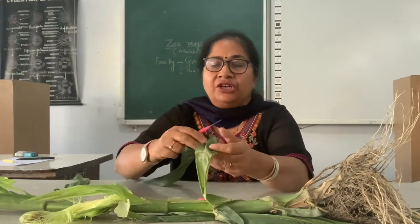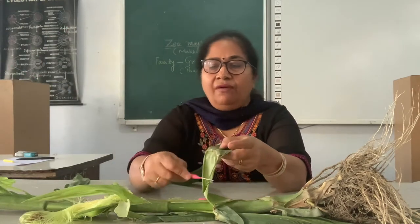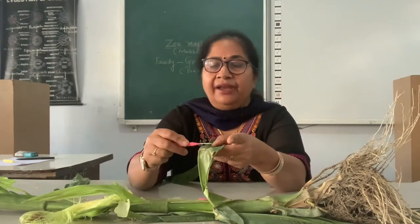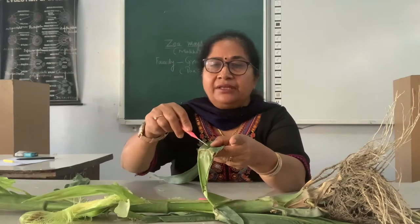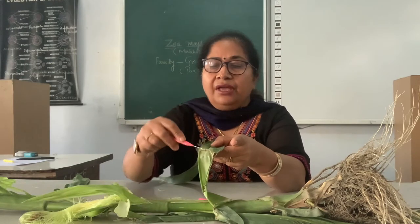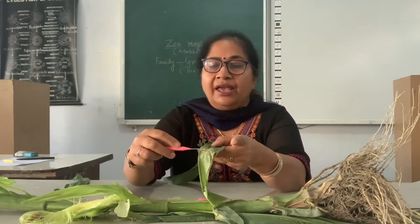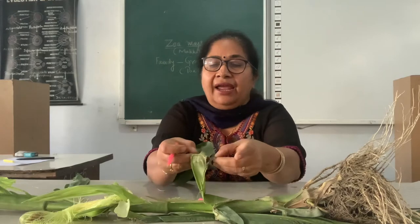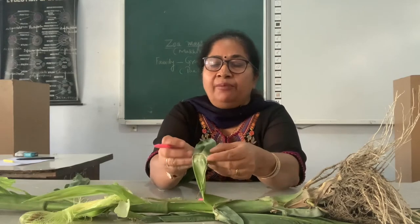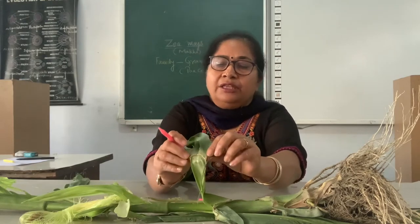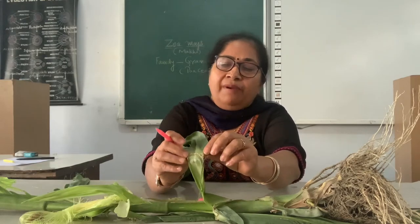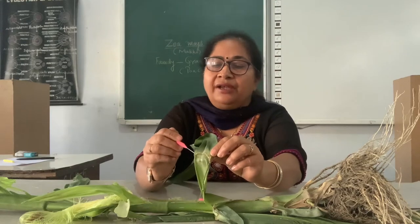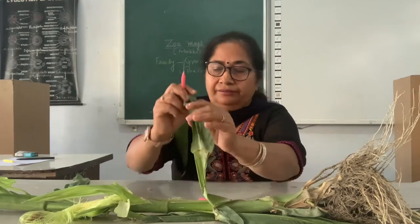At the junction of the leaf base and the leaf plate, there is a membranous outgrowth. This is called the ligule. At this part, the leaf plate is broadened, and this broadened part of the leaf plate is also called the auricle.